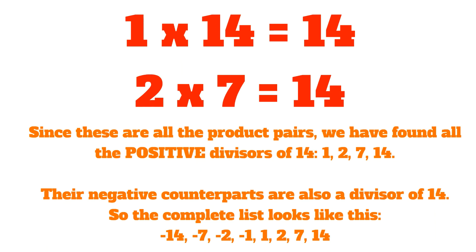Their negative counterparts are also a divisor of 14, because negative 1 times negative 14 is also equal to 14, and negative 2 times negative 7 is also equal to 14.